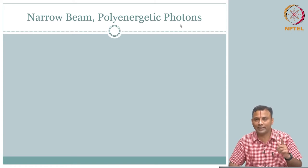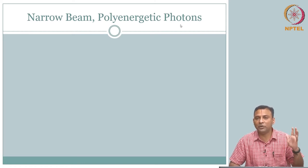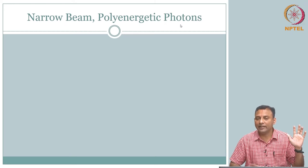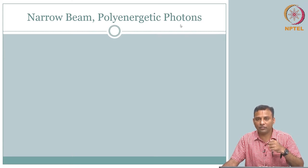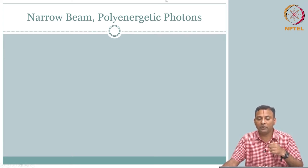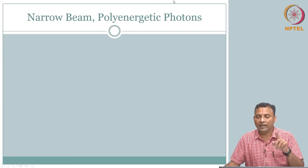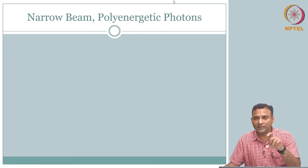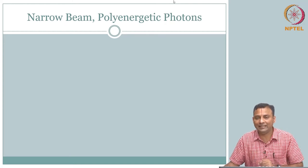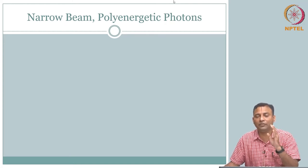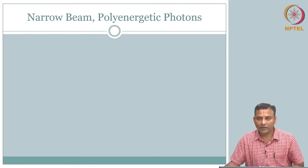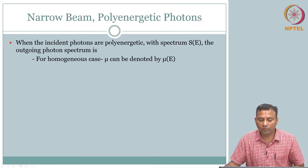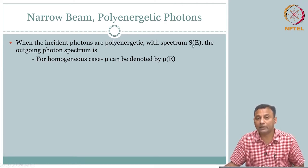But now instead of saying N photons go in, we should say there is a spectral line S of E — N1 photons at energy 1, N2 photons at energy 2. So S of E gives the number of photons at different energy levels going in; a spectral line is going in. When incident photons are poly-energetic with spectrum S of E...